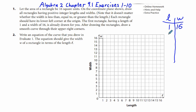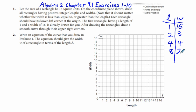We take the next highest integer factor of 16, which is 2. If we have a length of 2, the width corresponding to an area of 16 is 8. The next integer factor of 16 is 4, and 4 times 4 equals 16. Then a length of 8 corresponds to a width of 2, since 8 times 2 equals 16. Finally, if we have a length of 16, the width is 1.